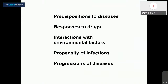I'll take five more minutes to end my talk. As I said, older populations have much larger genetic diversity with newer kinds of variants. Many of these are actually related to predisposition to various kinds of diseases, responses to drugs, interactions with environmental factors, propensity to infections, and progression of diseases. You may not believe that studying Neanderthals and Denisovans will tell us anything about our own disease burden or responses to drugs — but actually they do.